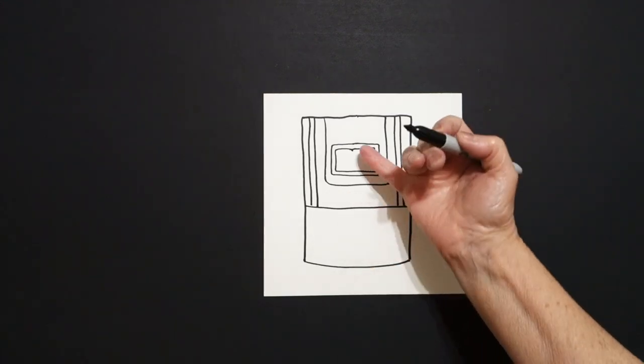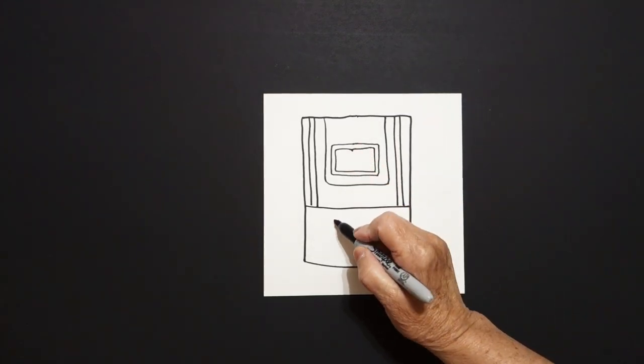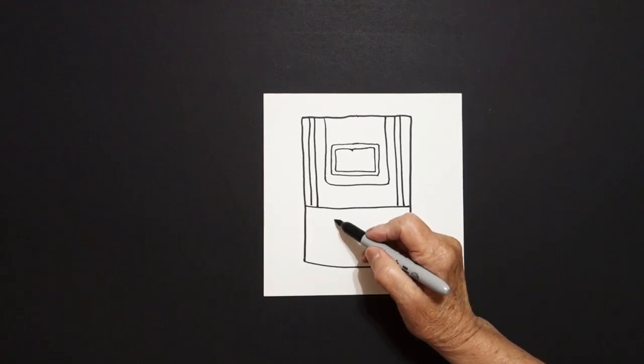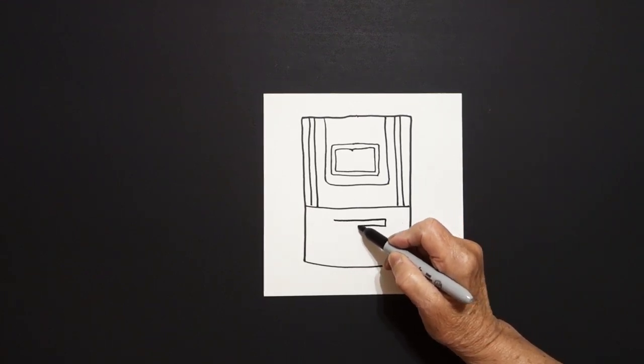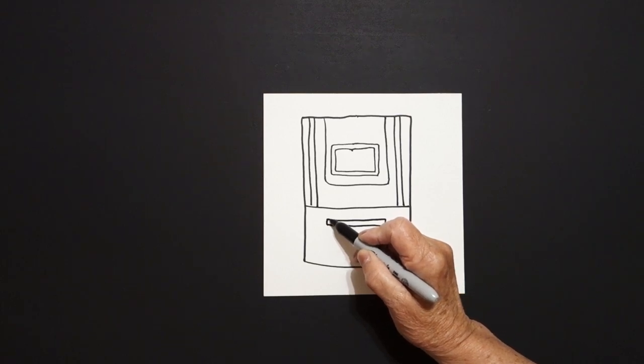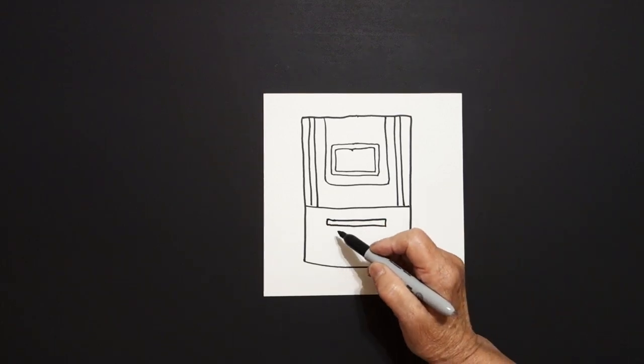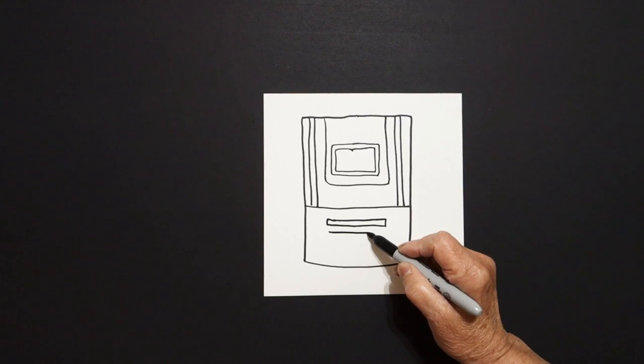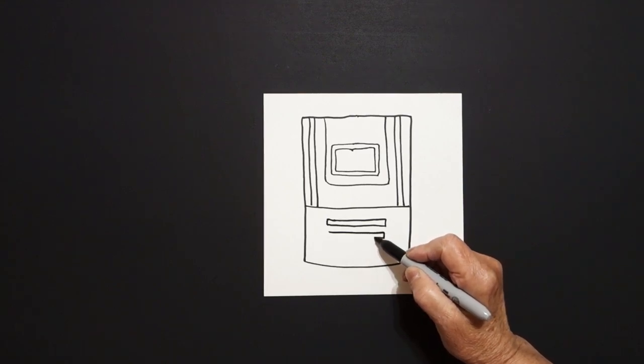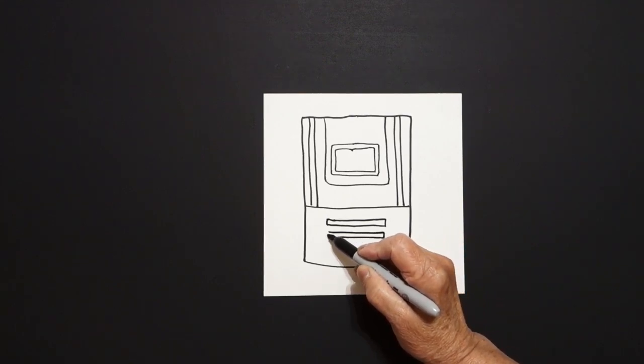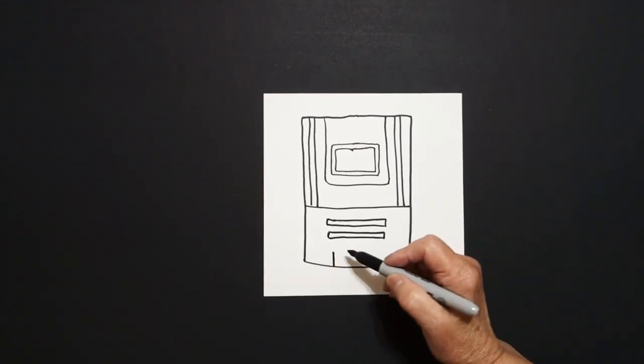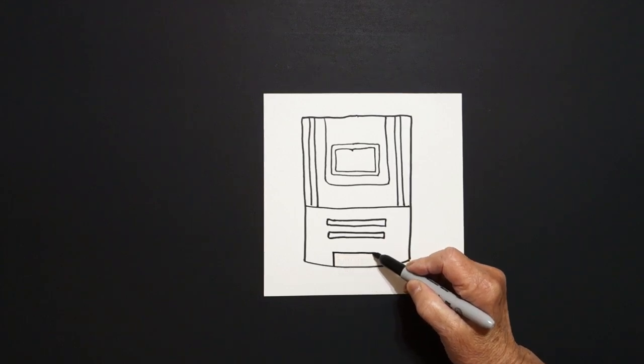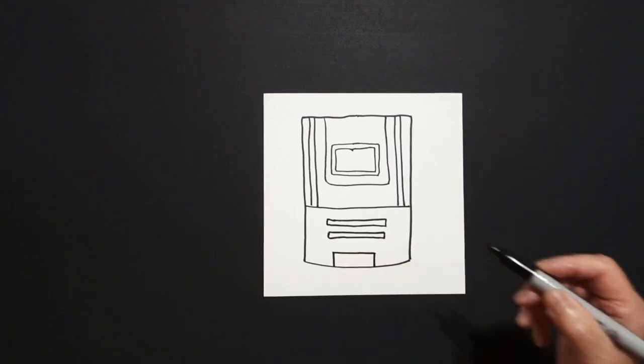Okay, right here at the bottom we're going to put a dot and we're going to draw a skinny rectangle. Straight line, straight line, straight line, connect. And another skinny rectangle, straight line, straight line, straight line over, up, connect. Come all the way down to the bottom and we're going to draw a straight line up, straight line over, straight line down, connect.